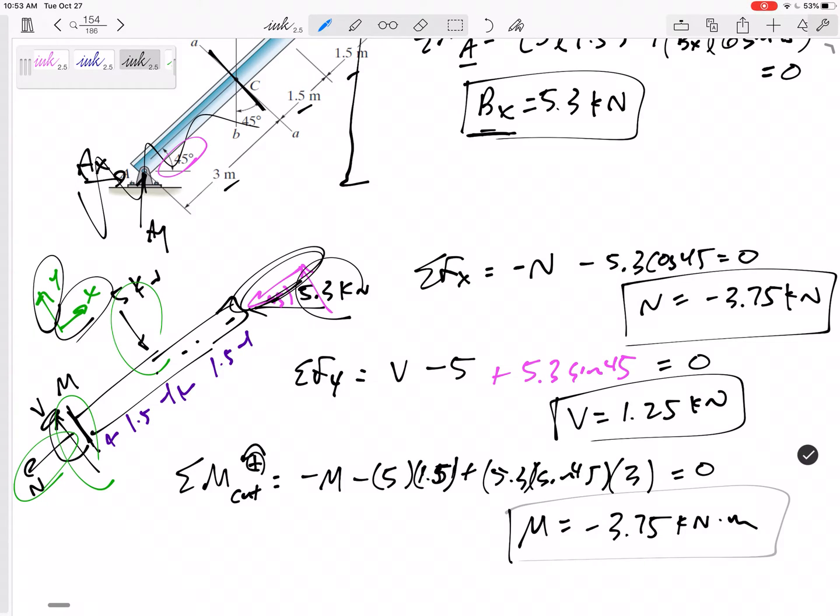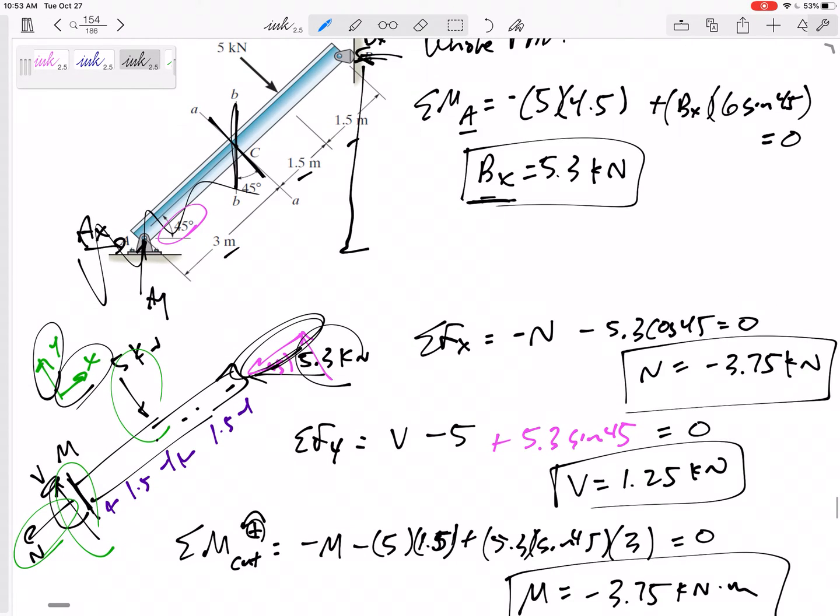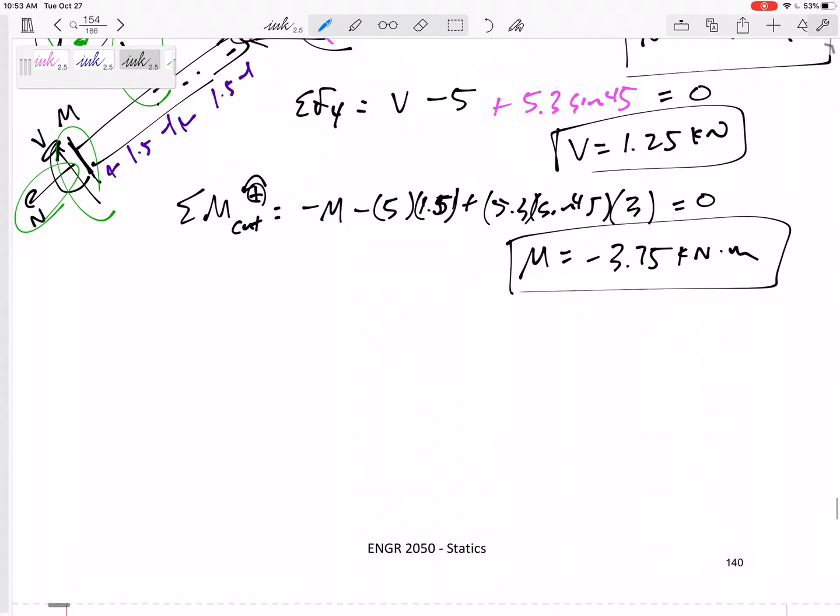And so those are my answers for N, V, and M if I cut it at C and if I cut it along the AA line. All right, would they change if I had cut them along the BB line? Let's see.